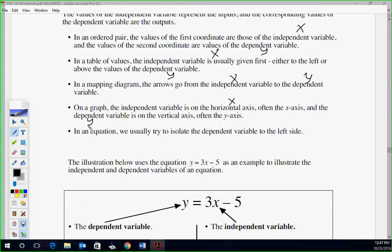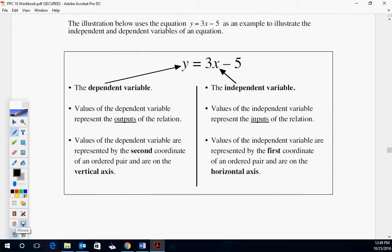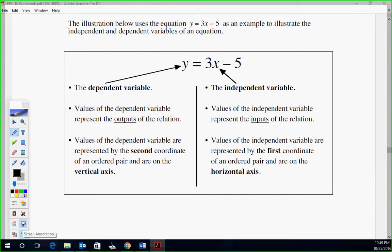In an equation, we usually try to isolate the dependent variable, Y, to the left side. Generally speaking, if I plug in something for X, it determines what Y is, correct? That's what makes it independent. So if I say this is your relationship, I said X is 6, X is 6, I can figure out what Y is because Y depends on X. Y depends on X. So if I put a 6 in here, 3 times 6 is 18, minus 5 is 13. So Y is 13. X determined Y.